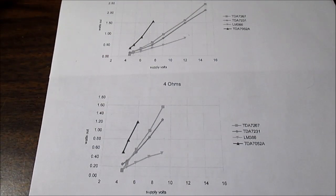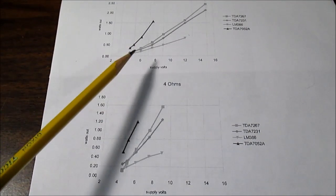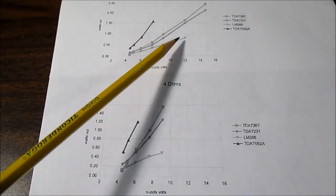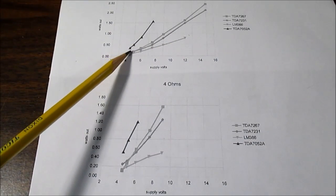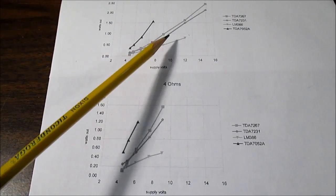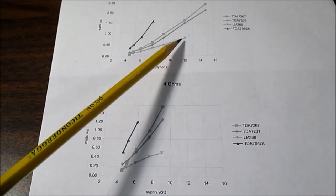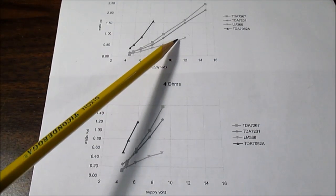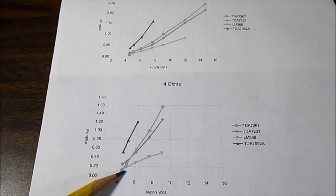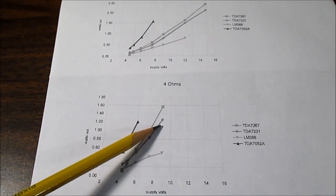I guess the disappointment here would be the LM386. It kind of lags behind, especially when you get above 6 volts. It starts lagging behind the other ICs. And that's really true at 4 ohm loads. The LM386 is just not meant for 4 ohm loads.